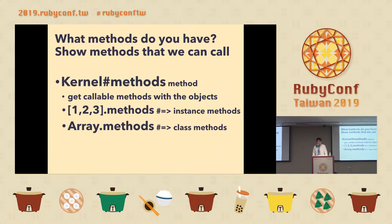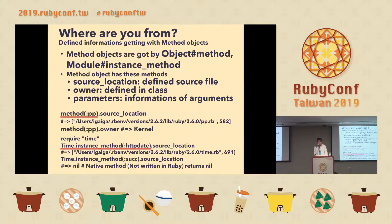What methods do you have? The methods method shows callable methods for a receiver. If the receiver is an instance, we can get instance methods. If the receiver is a class, we can get class methods. Where are you from? We can get definition information using method objects, obtained via Object#method or Module#instance_method. Using a method object, we can get defined information such as source_location, owner, and parameters.